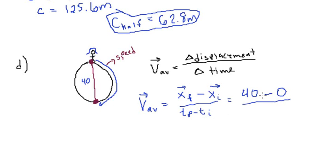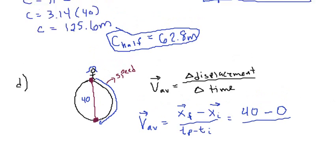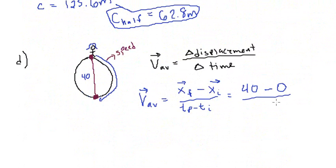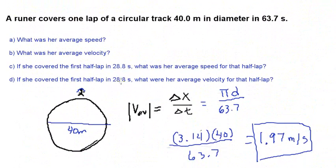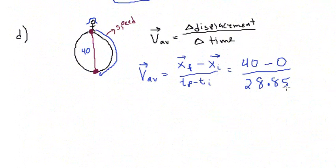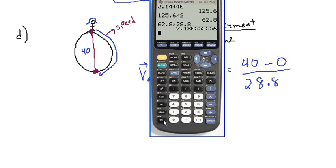And the time, the change in time is 28.85 seconds. Let me see. Oh, sorry, 28.8 seconds. 28.8 seconds. Okay, so this is 40 divided by 28.8. Let's see what that is. So 40 divided by 28.8.